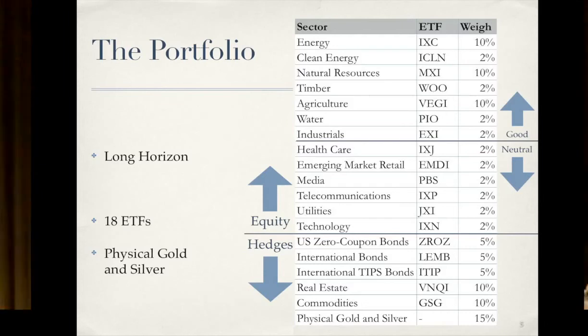So the way it compares, I've researched a lot of the investment advice of other authors and looked at portfolios from other authors that talk about investing for peak oil. This portfolio is more closely aligned with the asset class weightings of Ivy League endowments like Harvard and Yale that are generally considered to be optimally weighted for reducing your volatility and increasing your return. It also has low fees. It has 41 basis points of fees overall, which is below what the average ETF fee is. One caveat is that some of these ETFs are a little bit illiquid. So the bid ask spreads are going to be high.